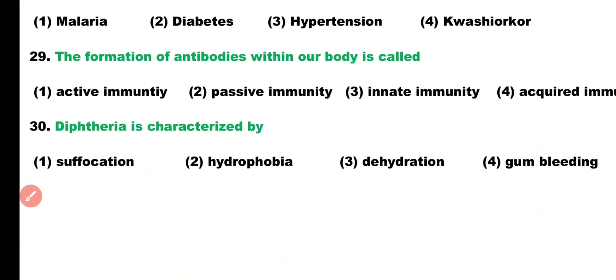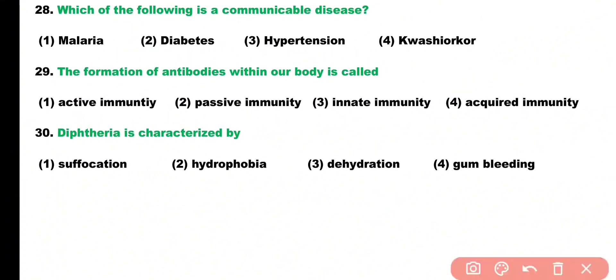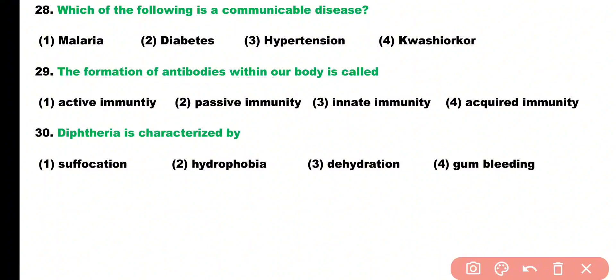Question number twenty-nine: the formation of antibodies within our body is called: active immunity, passive immunity, innate immunity, or acquired immunity. Correct answer is option one — when our body is exposed to an antigen, antibodies are formed in response, and this formation of antibodies is a type of active immunity.